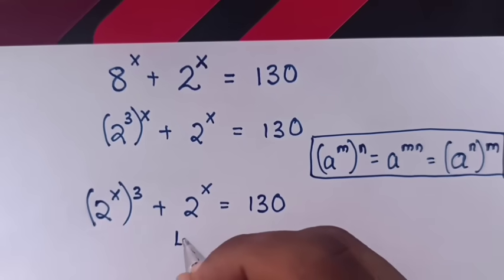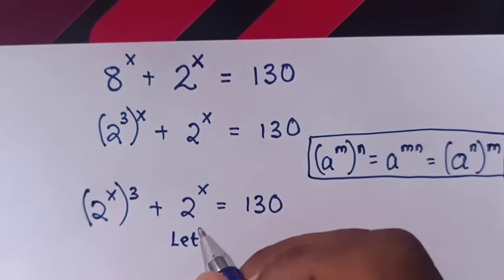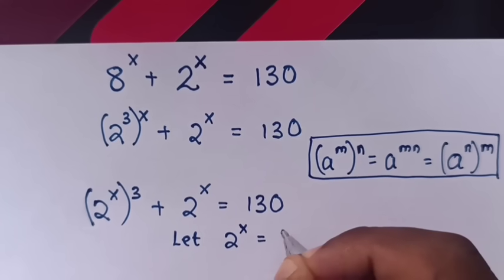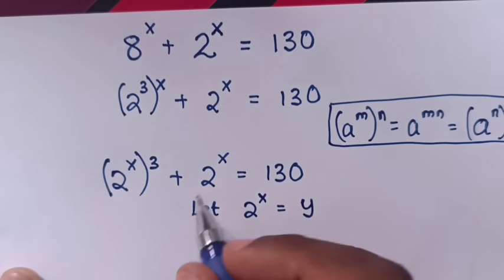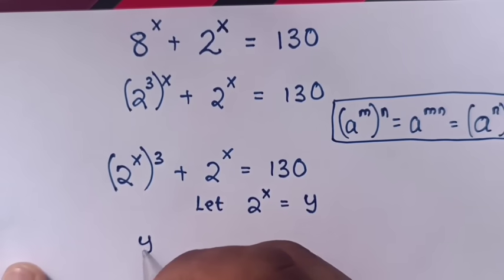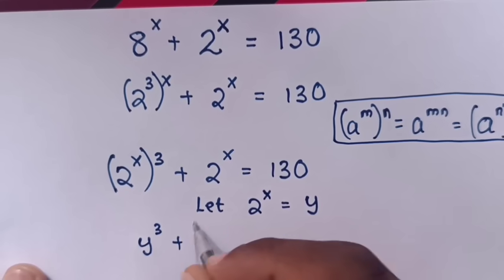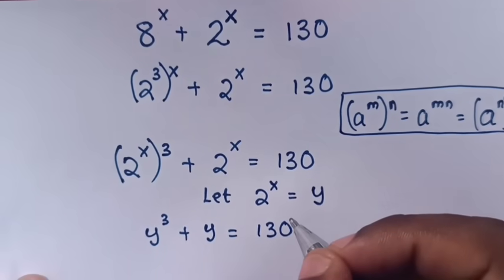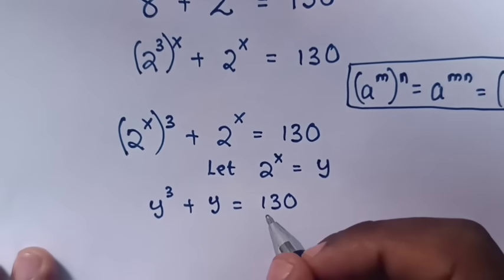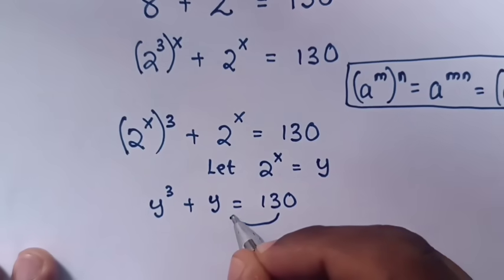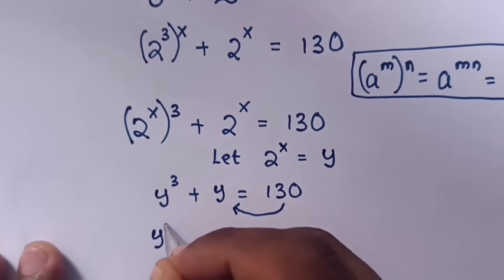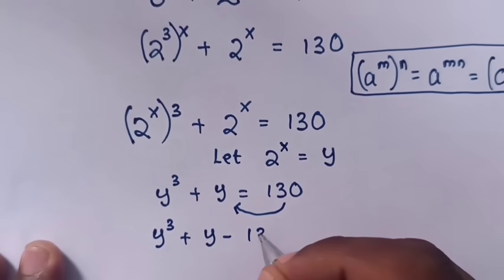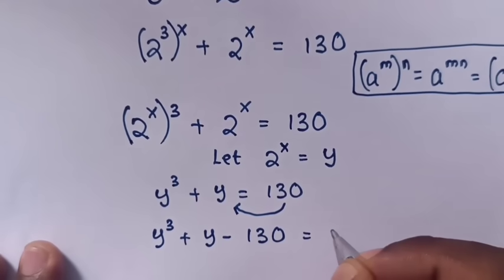We will let 2 power x be equals to y. Because 2 power x is common, it will be y power 3 plus y is equals to 130. Then this 130 we take to the left side, so our equation will be y power 3 plus y minus 130 is equals to 0.